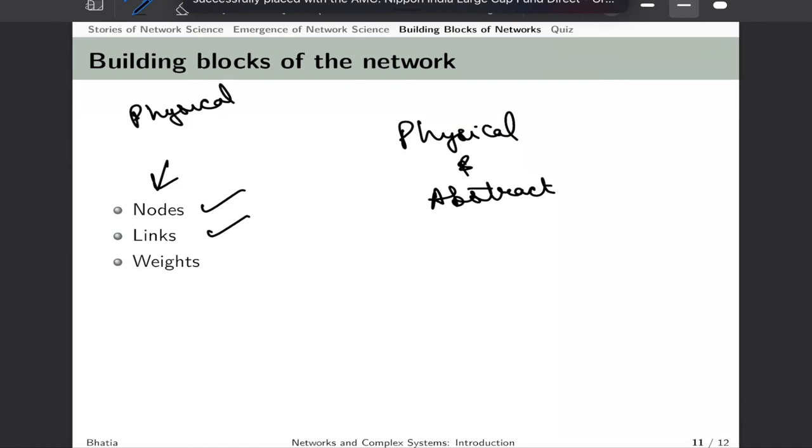Similarly, nodes can be physical or abstract. We will talk about these in the context of climate networks where we connect two points on earth with edges. We represent each variable—temperature, precipitation, or humidity—as a node. If there exists correlation between these pair of nodes, we say there is a direct edge between these abstract nodes. Finally, there are certain strengths of connections. For example, if 23 trains run between Delhi and Mumbai versus five trains between Delhi and Bhopal, we need to assign weight to that edge. Weight is an important building block.